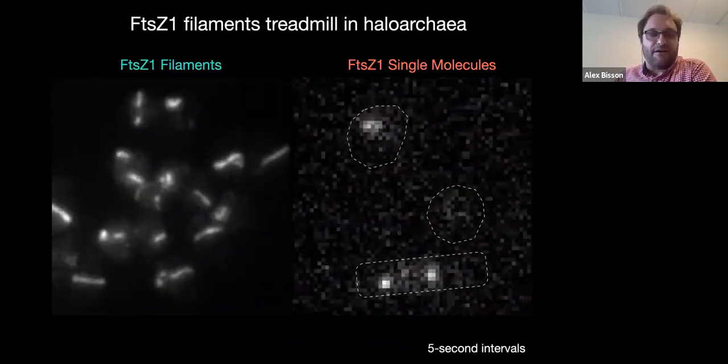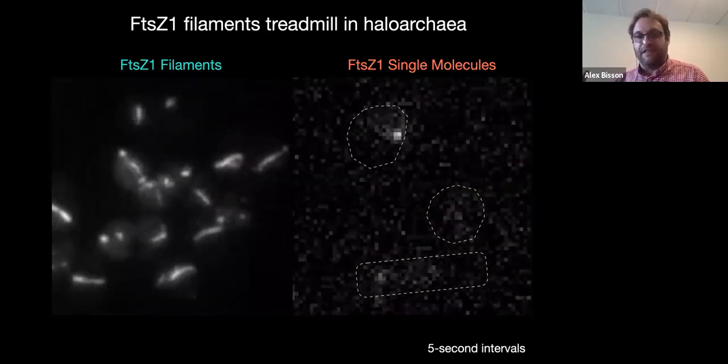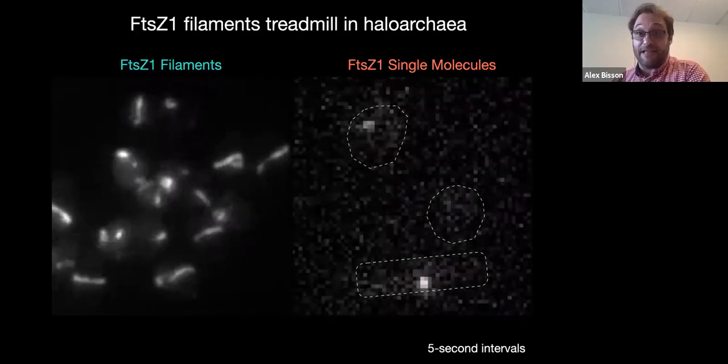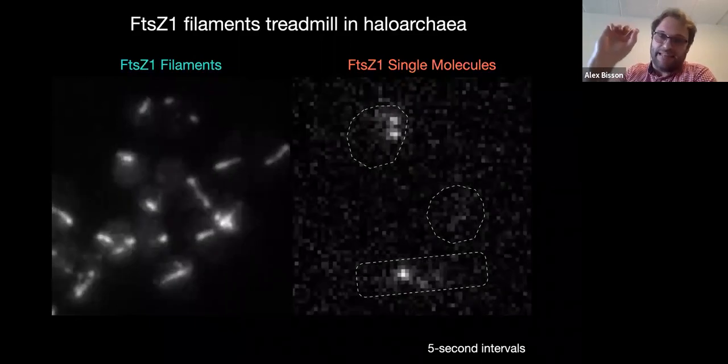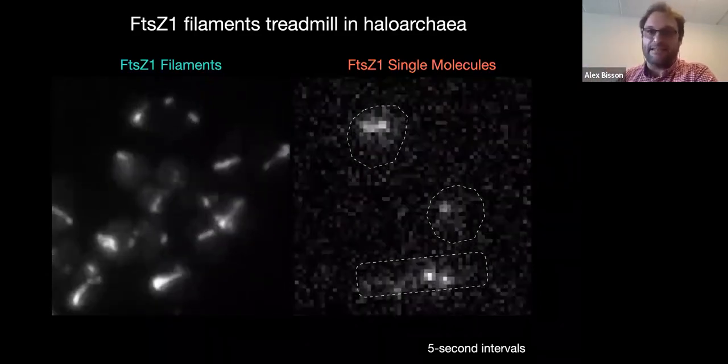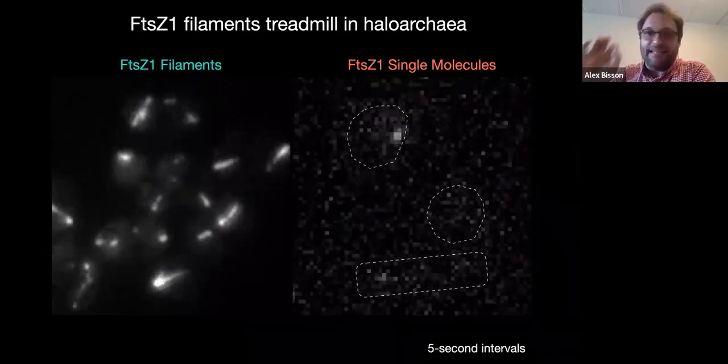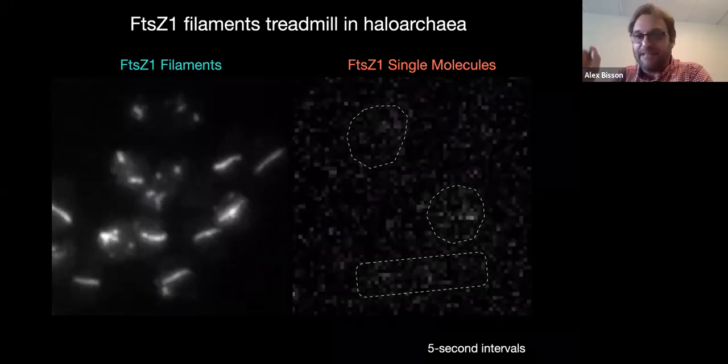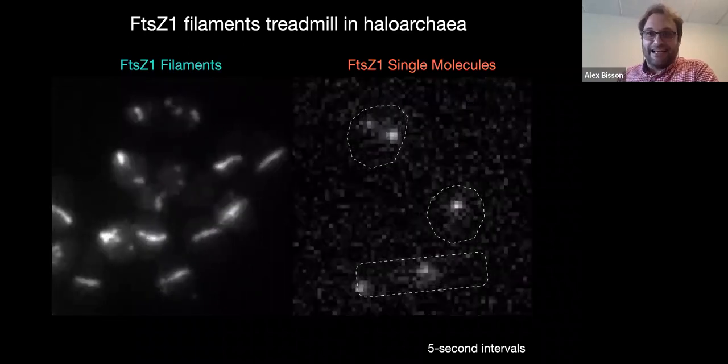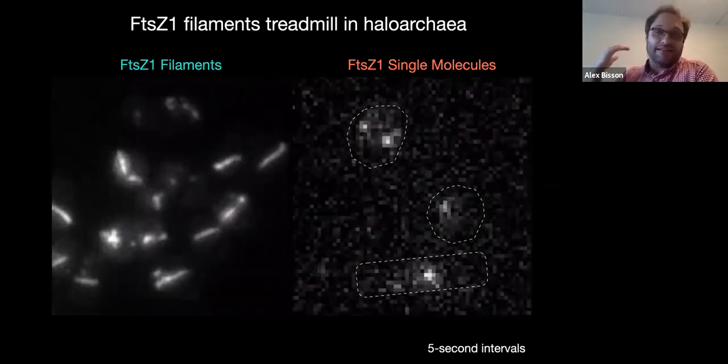When we image single molecules of these filaments, you see that they are non-moving directionally. They're static. This is the evidence we use, among other experiments, to prove that bacterial FtsZ filaments are actually treadmilling across the cell cycle. To see if this is the case for archaeal cells, I did the same thing. While imaging FtsZ1 filaments, I also imaged single molecules of these polymers. The same way as bacterial FtsZ, the archaeal FtsZ1 single molecules are non-moving directionally. They show up, stay static for a while, then either photobleach out or the subunits leave the polymer and diffuse in the cytoplasm.